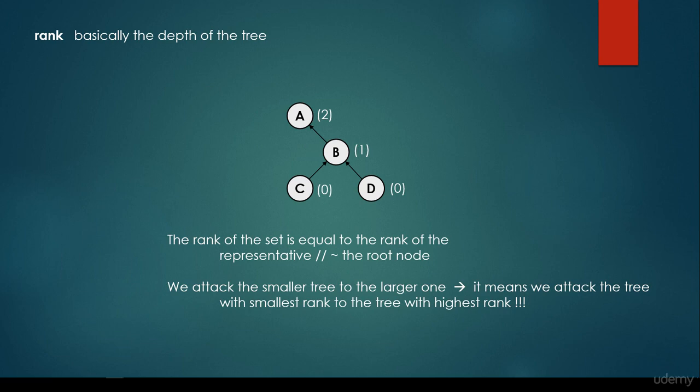What about the rank? The rank is basically the depth of the tree. Leaf nodes have rank 0, the parents of leaf nodes have rank 1, the parents of those have rank 2, and the rank of the set equals the rank of the representative or root node. So we attach the smaller tree to the larger one — meaning we attach the tree with smaller rank to the tree with higher rank.